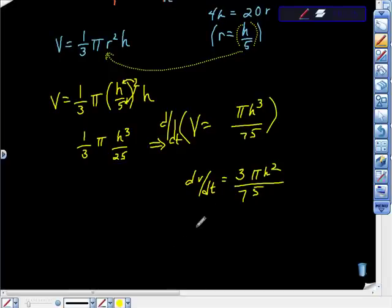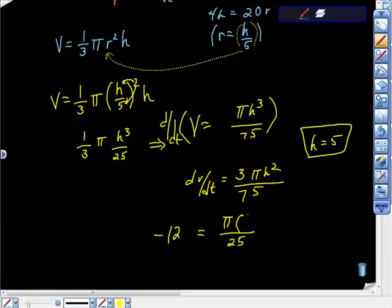We're almost done. I hope you're still with me. All I'm really doing here is just trying to get this thing in some form. We know that they want to know what happens when the height is 5, so when the height is 5. And we know that dV/dt is negative 12 centimeters per second, because that was the value that they gave us. So negative 12 is equal to, and 3 of this is π h² over 25. Well, we also know that h is 5, because they ask us what's the rate when the height of the liquid is 5.